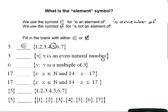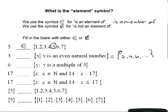The next question is: is 3 an element of the set of all x such that x is an even natural number? This is set-builder notation. In roster notation, even natural numbers are 2, 4, 6, and so on. Is 3 a member of this set? No. So 3 is not an element of the set of all x such that x is an even natural number.